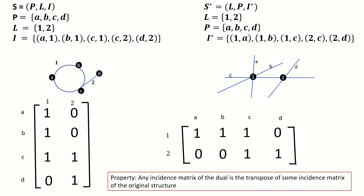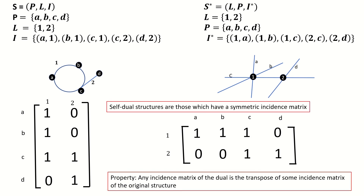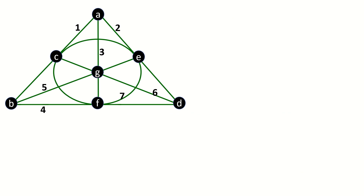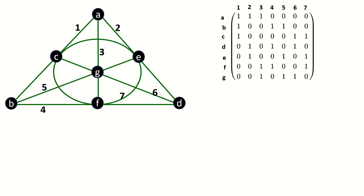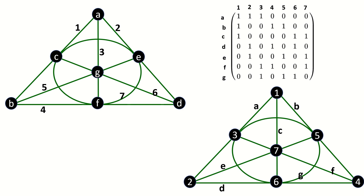This fact lets us use incidence matrices to analyze the relationship between an incidence structure and its dual, and lets us test for self-duality — that is, incidence structures that, when we take the dual, look the same, or more formally, are isomorphic to their duals. An incidence structure is self-dual if and only if some ordering of its points and lines produces a symmetric incidence matrix. This implies an incidence structure can only be self-dual if it has the same number of points as lines. The Fano plane does have the same number of points as lines, and it turns out it is indeed self-dual.